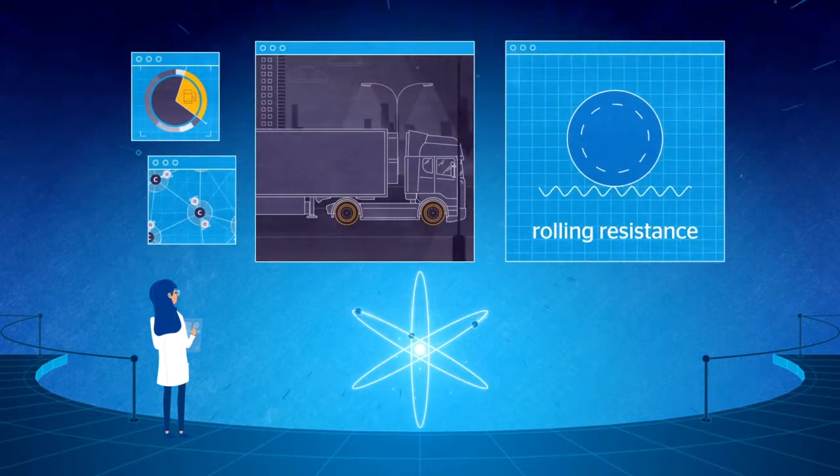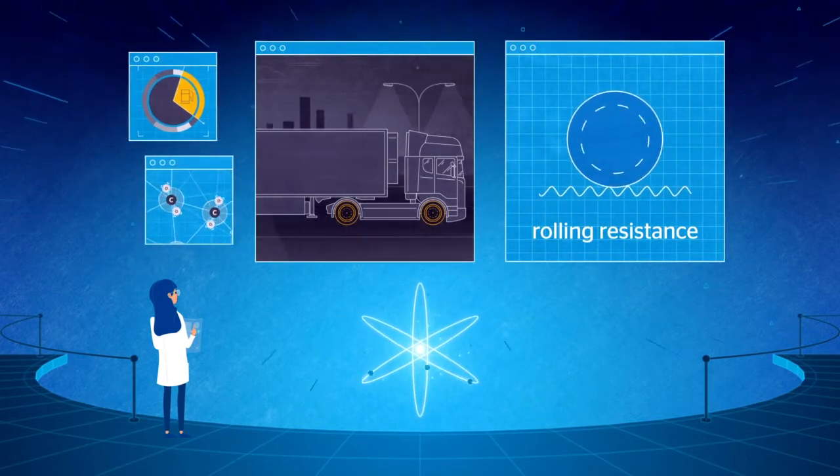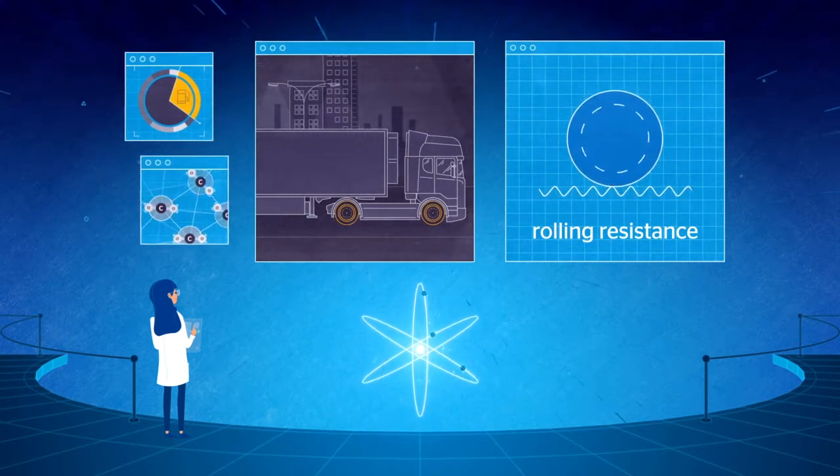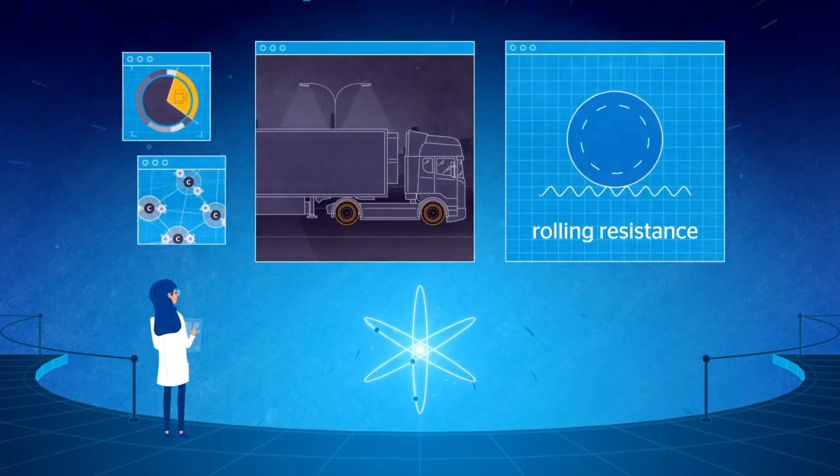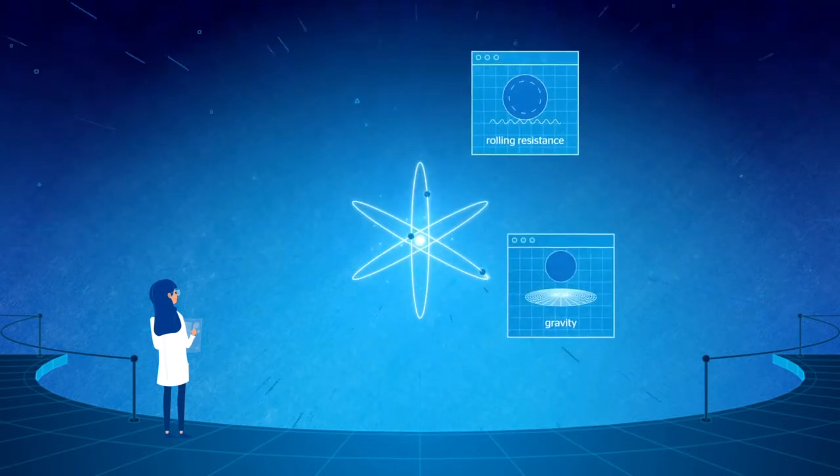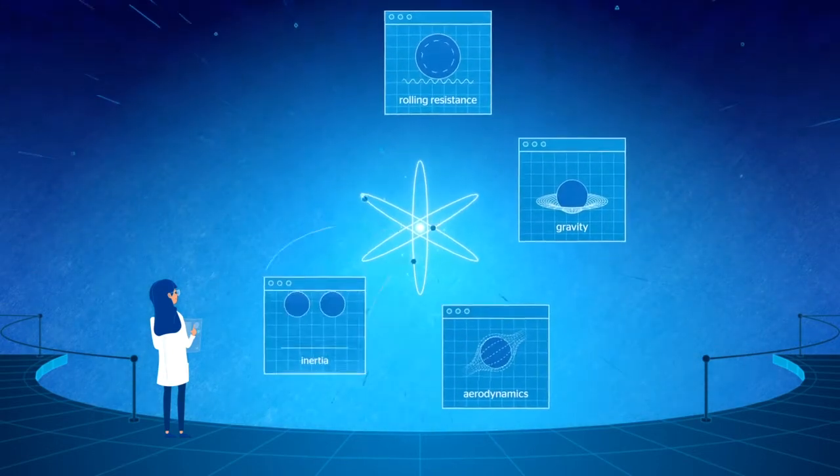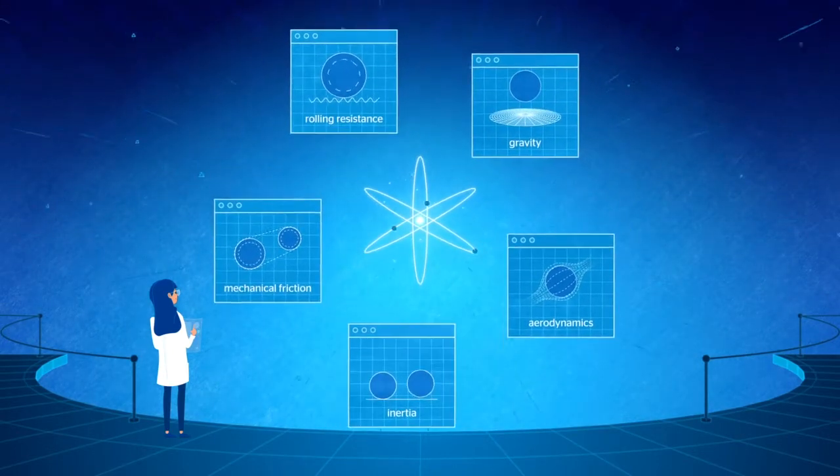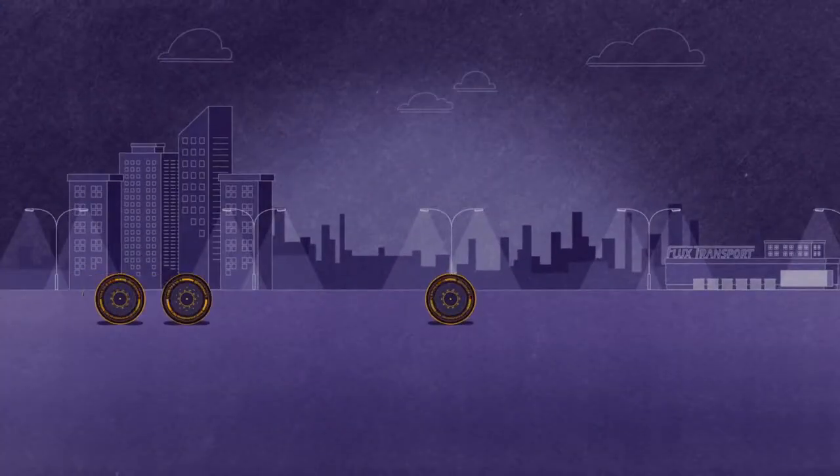Rolling resistance is one of five main forces that a truck and its tires must overcome in order to move forward and make the tires roll on a given surface. The other four are gravity, aerodynamics, inertia, and mechanical friction. But what does rolling resistance mean exactly?